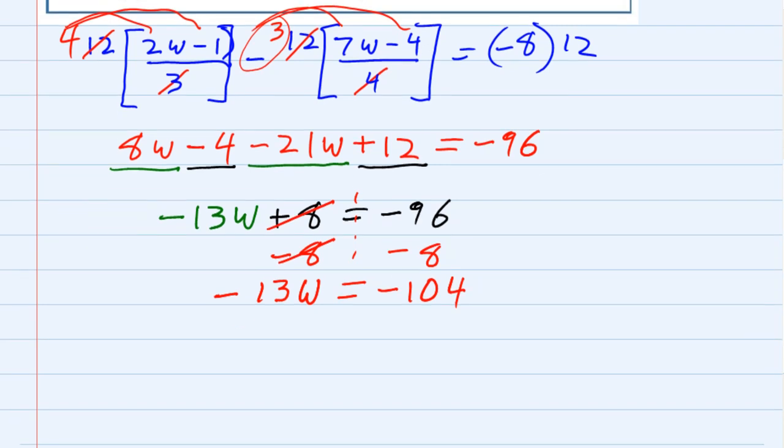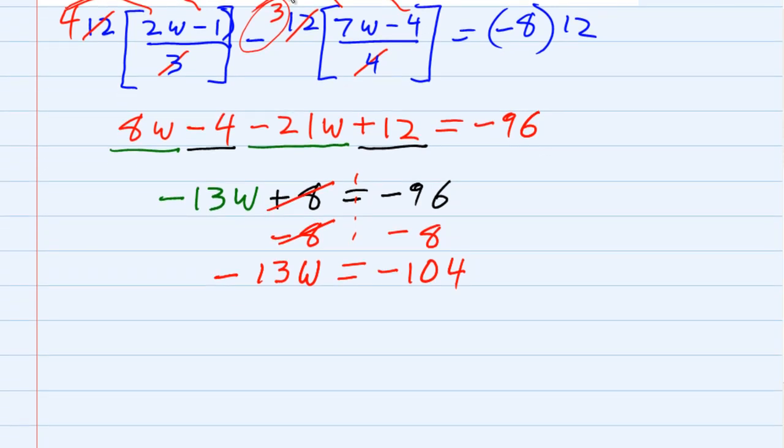Last step, I need to get the w by itself. So, I need to undo multiplying by negative 13 by dividing by negative 13. And I want to divide by negative 13 on both sides. So, the 13's cancel,